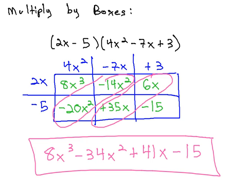When we're multiplying using boxes, we write the first polynomial on the left side, the second polynomial across the top, and then in each cell we multiply the row and column headings. When combining like terms, we'll end up with our final solution.